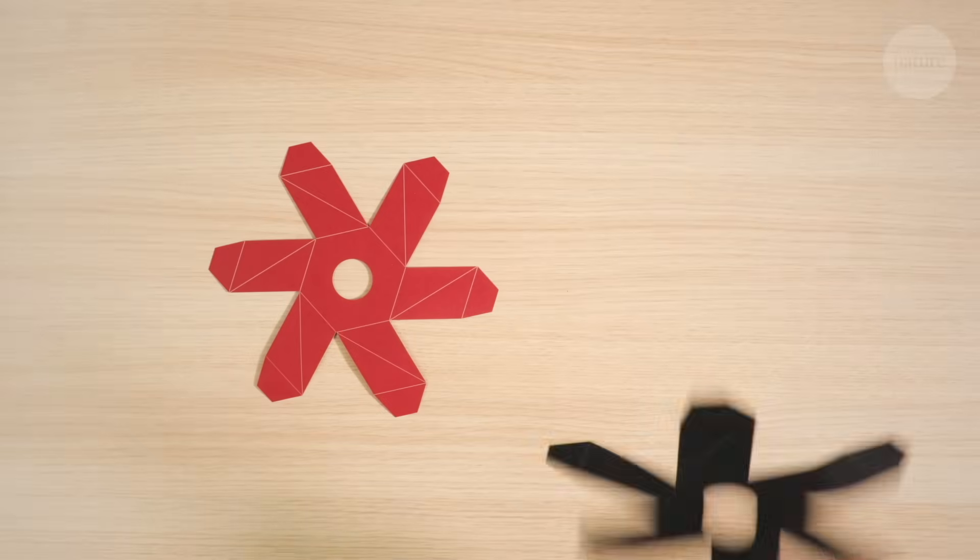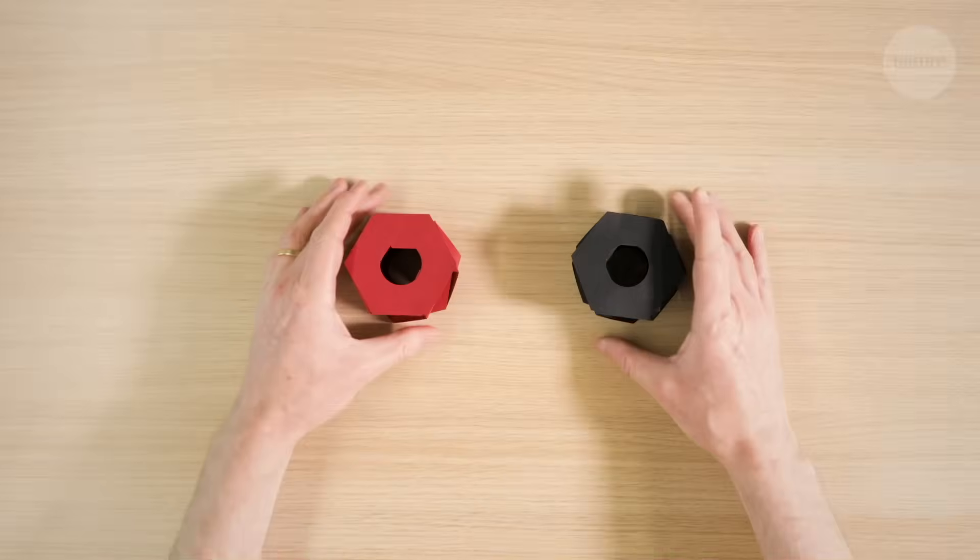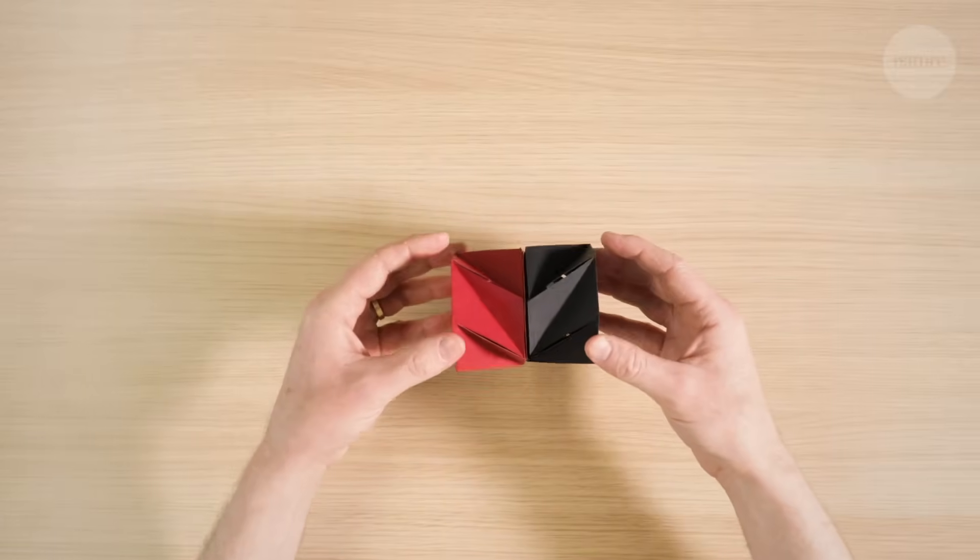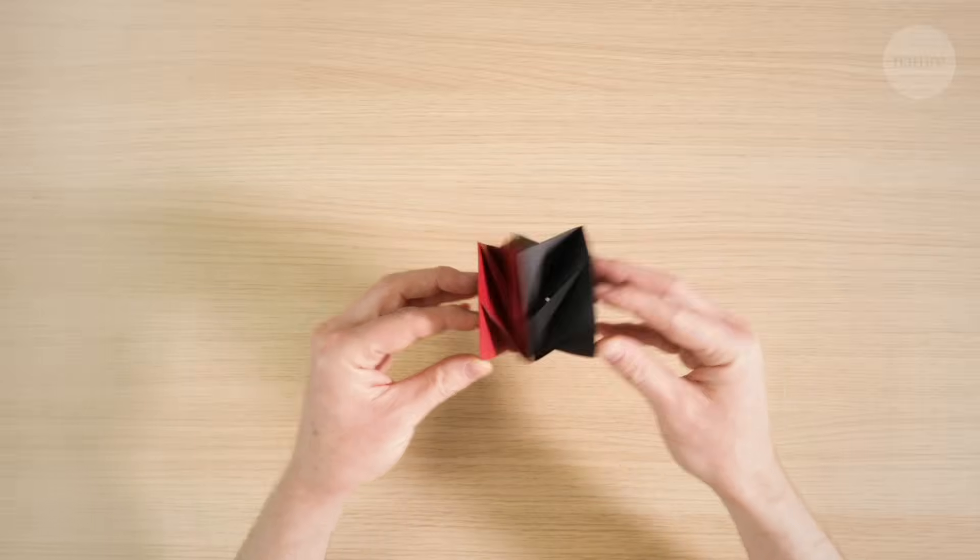And if you make a second tower folded in the opposite direction and attach it to your first tower, you can create what the researchers call a dipole. A module that when compressed, rotates in the centre while the ends remain fixed.